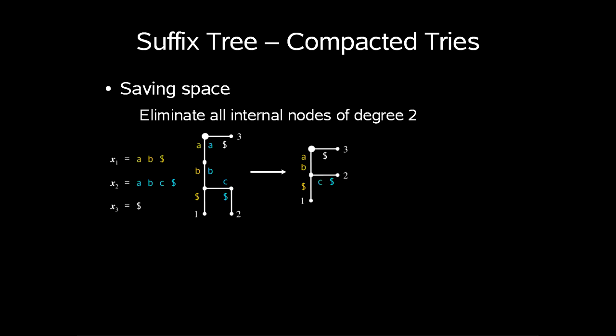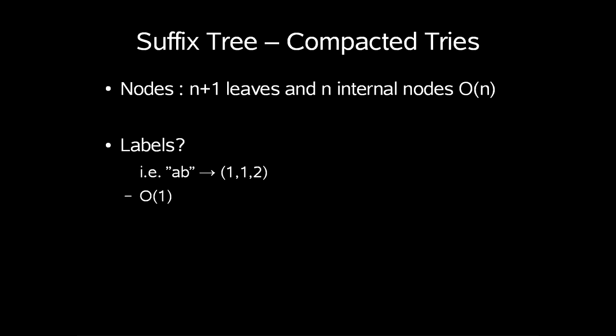In terms of space complexity, in this general case with n input strings, we of course want to minimize the space consumption of having to store this tree. Using what is called compacted trees, which is to eliminate all internal nodes of degree 2. For n input strings our tree has n plus 1 leaves and at most n internal nodes. In this example this would be space of order n.